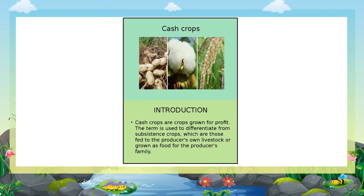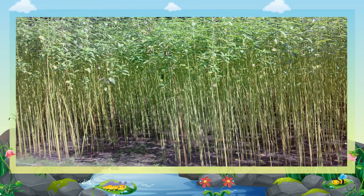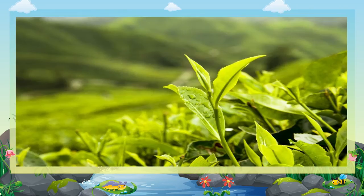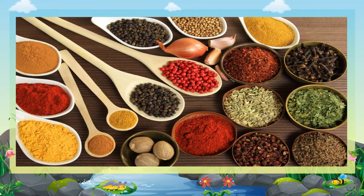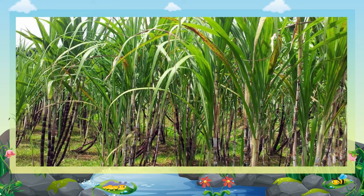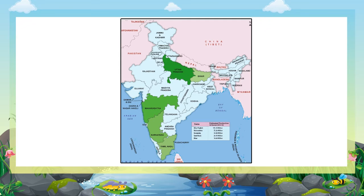Three: Cash crops. Cash crops are those crops which are grown for sale in the market. Sugarcane, cotton, jute, rubber, tobacco, tea, coffee, oilseeds, and spices are cash crops. Sugarcane is used for making gur, khand, and sugar. India is the world's largest producer of sugarcane. Uttar Pradesh, Maharashtra, Punjab, Haryana, Tamil Nadu, and Bihar are major producers of sugarcane.